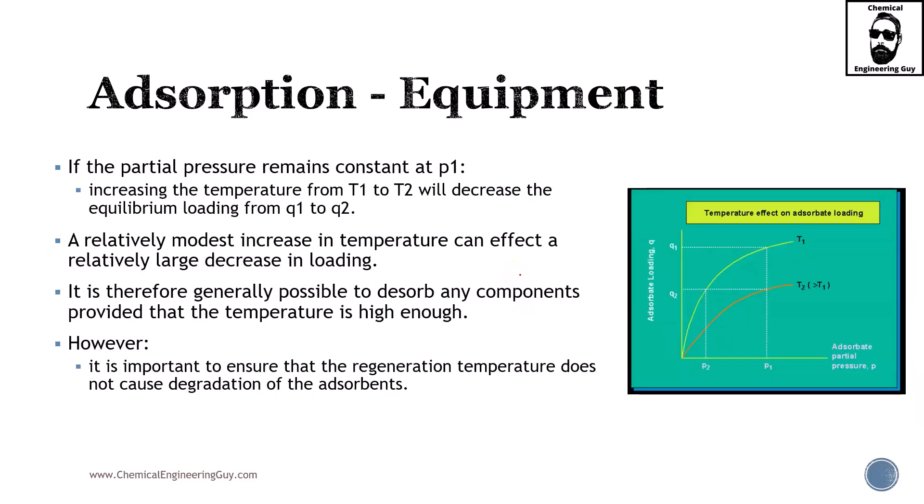If the partial pressure remains constant at P1, which we already stated, this is 1 atmosphere, increasing the temperature from T1 to T2, let it be 100 Celsius to 200 Celsius, the loading is going to change from Q1 to Q2, the saturation. A relatively modest increase in temperature can affect a relatively large decrease in loadings.